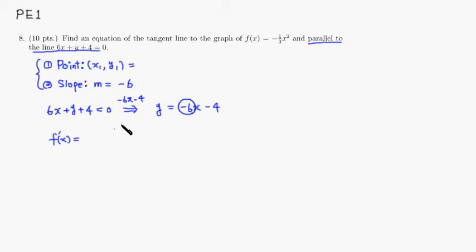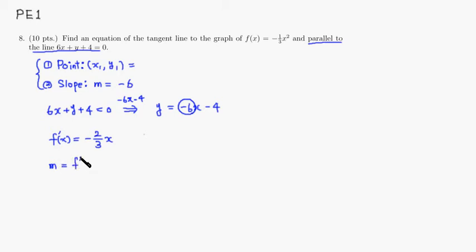Taking the derivative of f(x): bring the 2 in front, the −1/3 is already there, giving f′(x) = −(2/3)x. To find the slope at point x₁, we plug in x₁: f′(x₁) = −(2/3)x₁. We know this has to equal −6 because that's the slope we need.